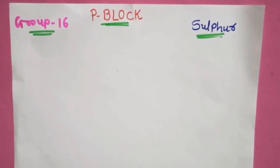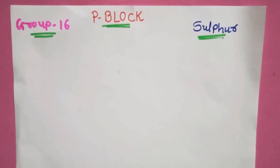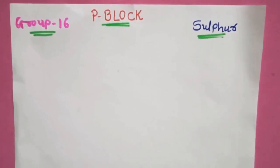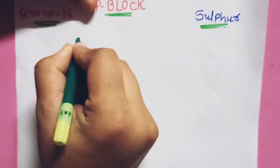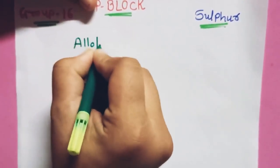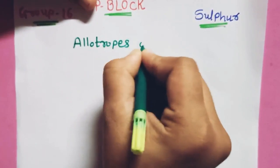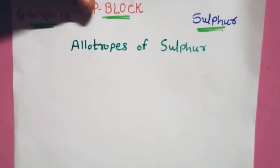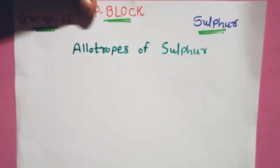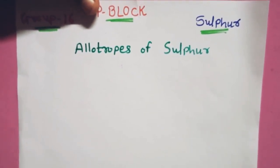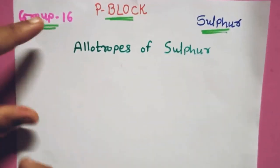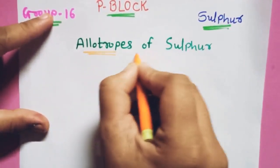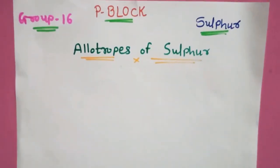In this lecture, we are going to study the allotropes of sulfur. Allotropes are those substances whose chemical properties are the same but physical properties are different. For example, if you talk about the allotropes of carbon — diamond, graphite, and fullerene.